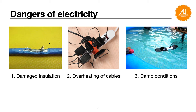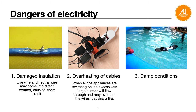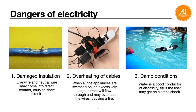Next, dangers of electricity. There are three types: damaged insulation, overheating of cables, and damp conditions. When insulation is damaged, the live wire and neutral wire may come into direct contact, causing a short circuit and fire. When all appliances are switched on together, a large current may overheat the wires and cause a fire. In damp conditions, water is a good conductor and the user may get an electric shock.